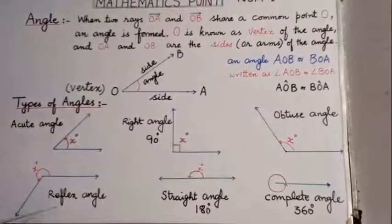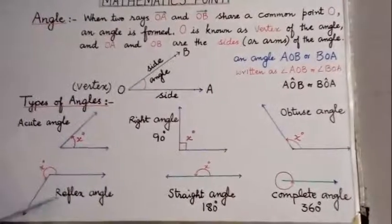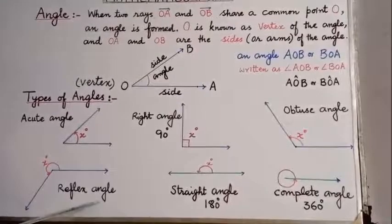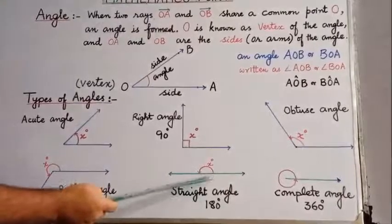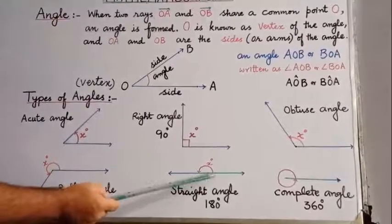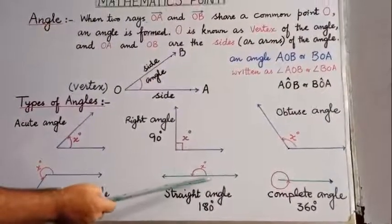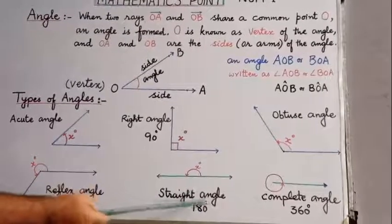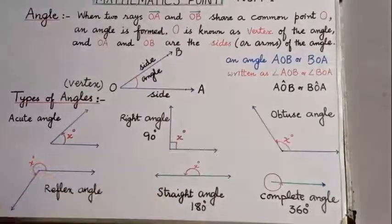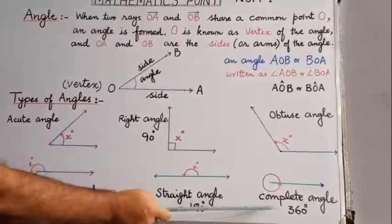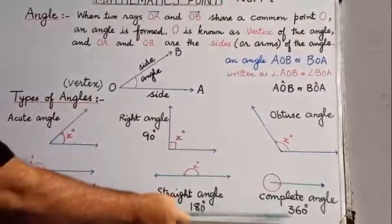Now we come to the reflex angle. This angle is greater than 180 degrees but less than 360 degrees, and it is called a reflex angle. Next is the straight angle — you can see two rays with a vertex point, one ray on the right side and one on the left side. When joined they form a straight angle, which is equal to 180 degrees. Finally, the complete angle — when two rays form a complete circle, the complete angle is equal to 360 degrees.